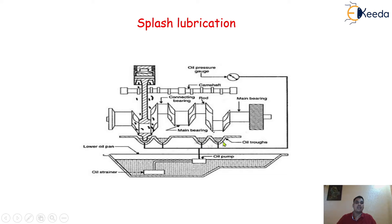Let us consider a four-cylinder engine or a multi-cylinder engine. In that case, there are four oil troughs which are fitted just below the crankshaft itself. Here is that particular crankshaft, and this is the camshaft and the piston and cylinder assembly. The piston will always reciprocate inside the engine cylinder. The connecting rod of the piston has one splasher — at the end of this particular portion of the connecting rod, there is a specific tip called the dipper or splasher.